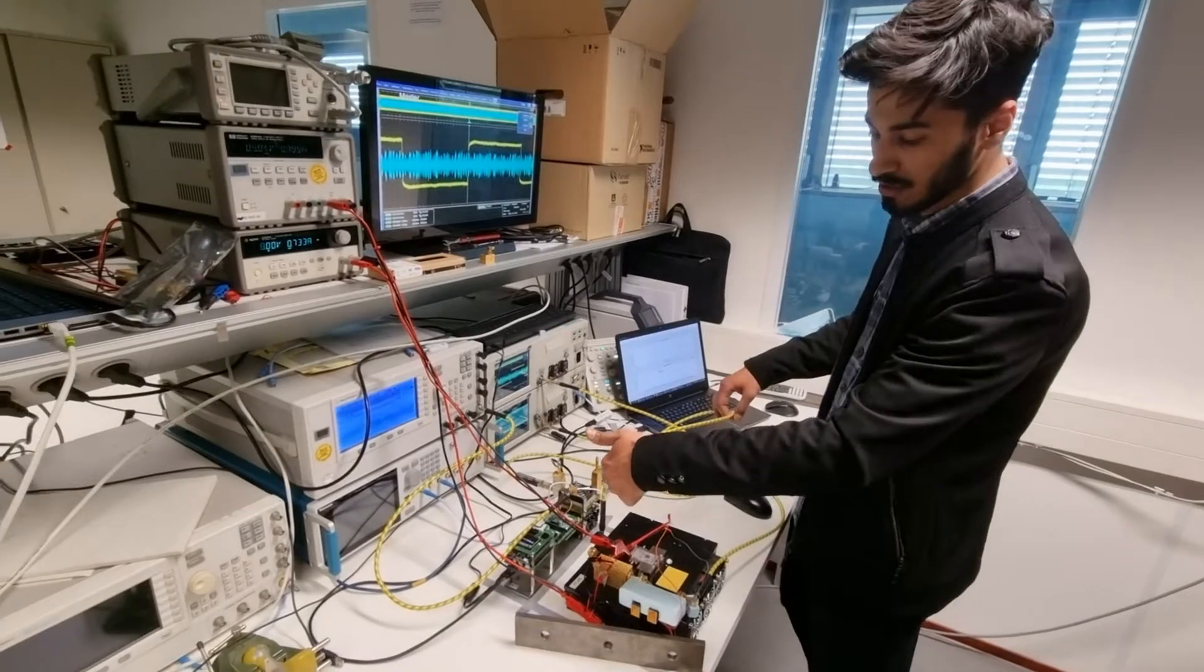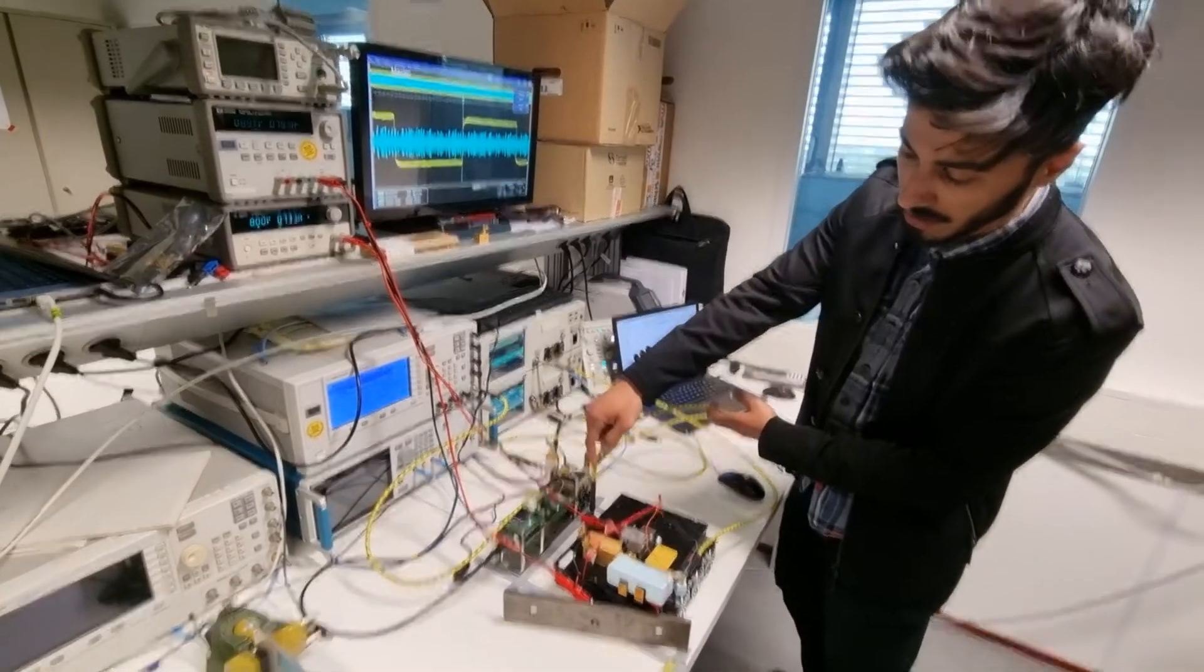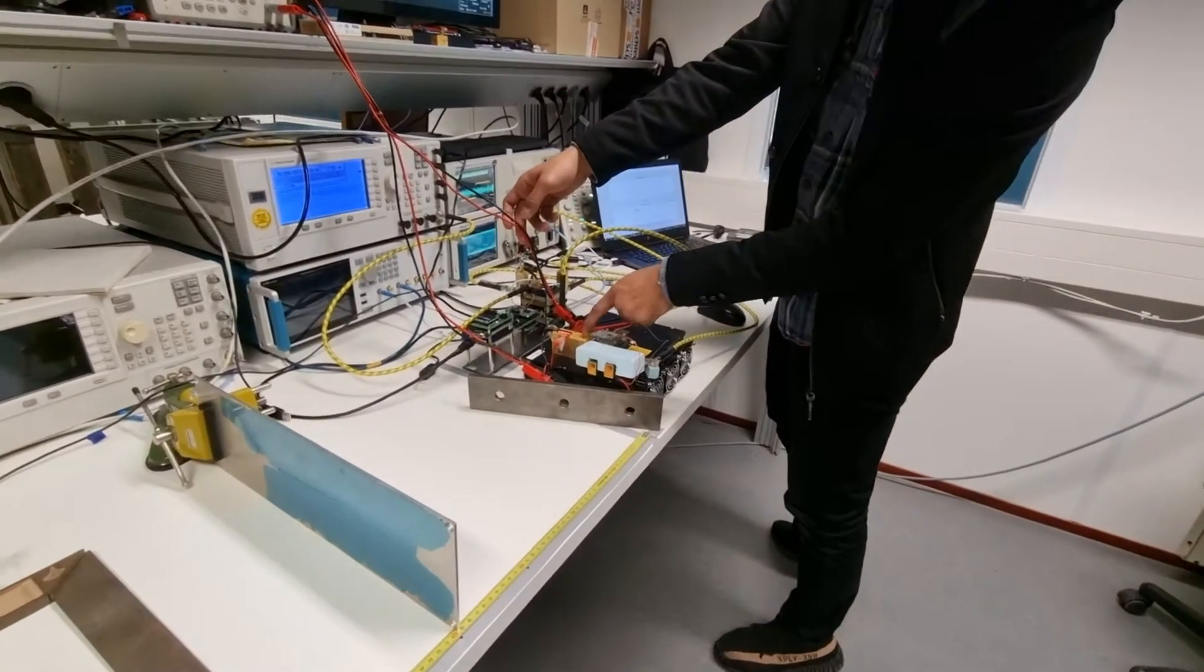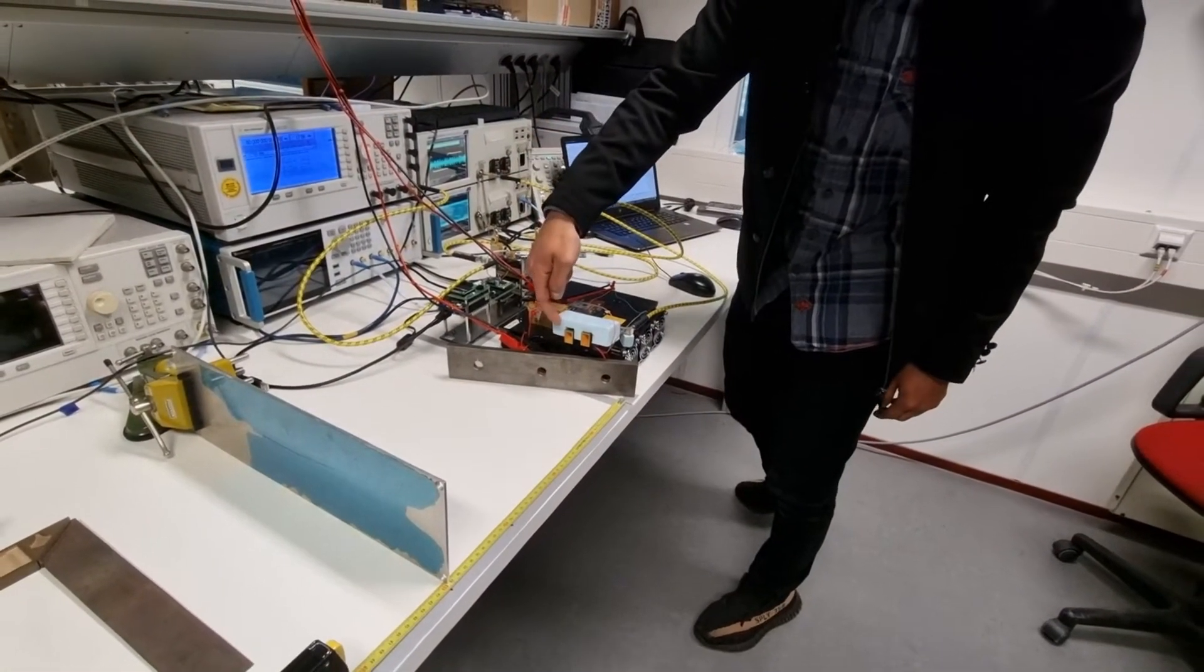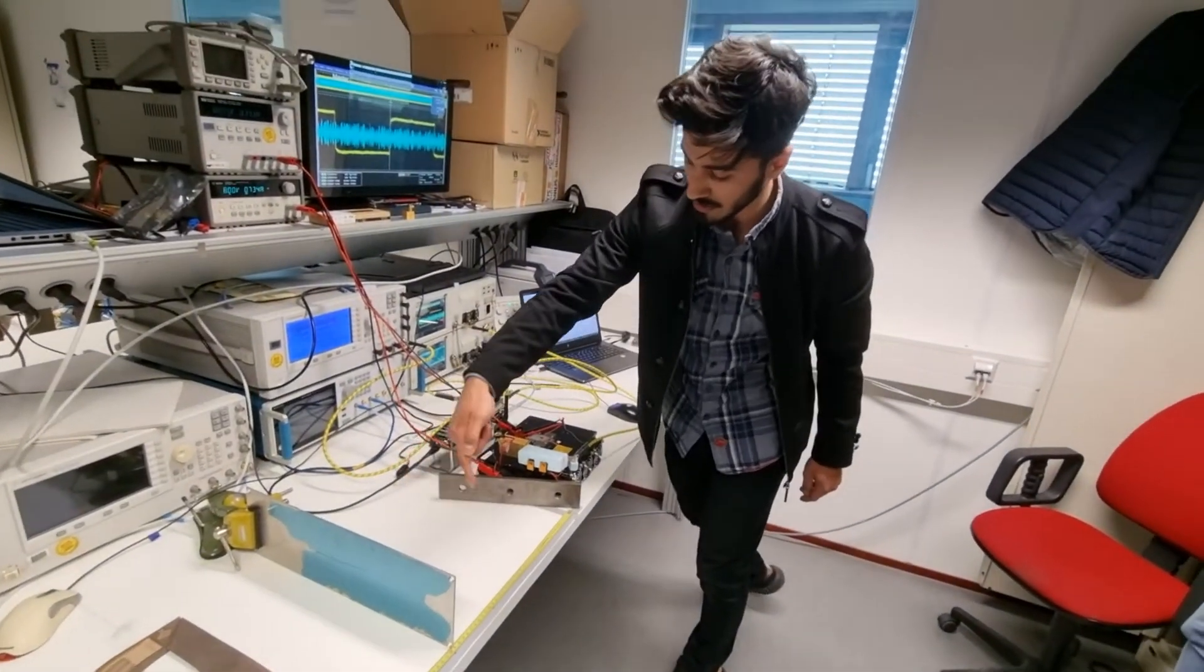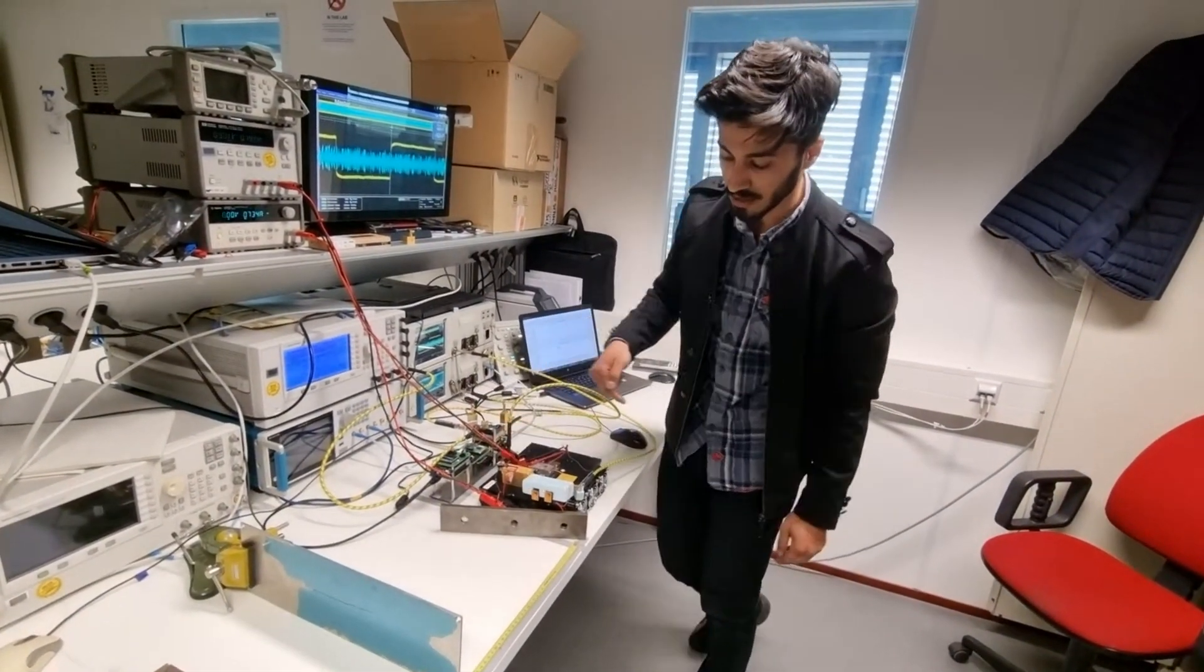And then this signal just goes through the PA, gets amplified, and these are just the power lines of the heat sink and the PA itself. So here comes the first antenna and this transmits the signal, gets reflected here, and then this is the receiver.